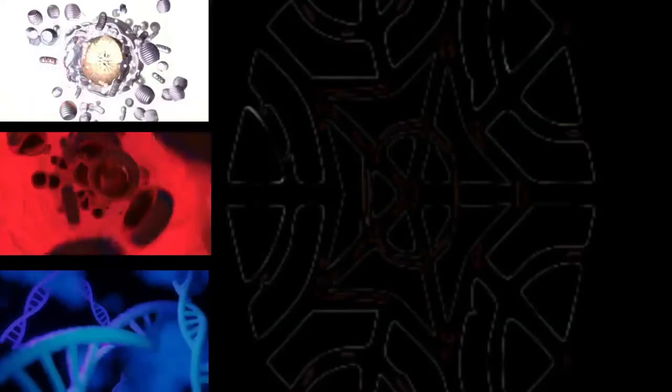Eukaryotic cells are typically much larger than those of prokaryotes, having a volume around 10,000 times greater than the prokaryotic cell. They have a variety of internal membrane-bound structures called organelles, and a cytoskeleton composed of microtubules, microfilaments, and intermediate filaments, which play an important role in defining the cell's organization and shape. Eukaryotic DNA is divided into several linear bundles called chromosomes, which are separated by a microtubular spindle during nuclear division.